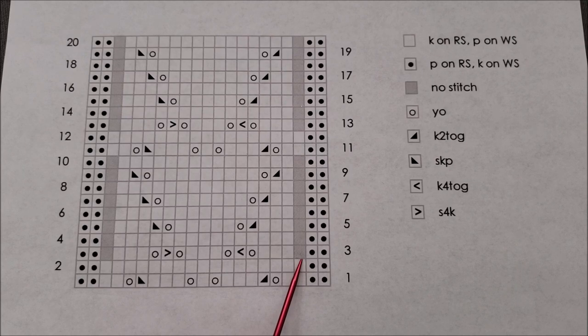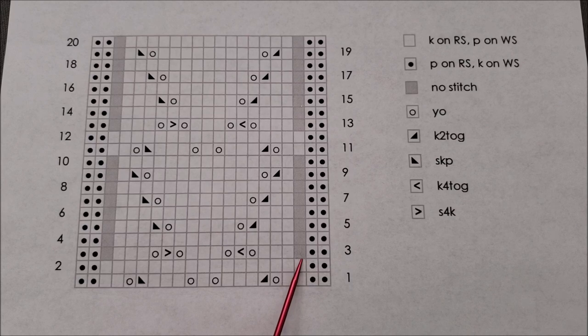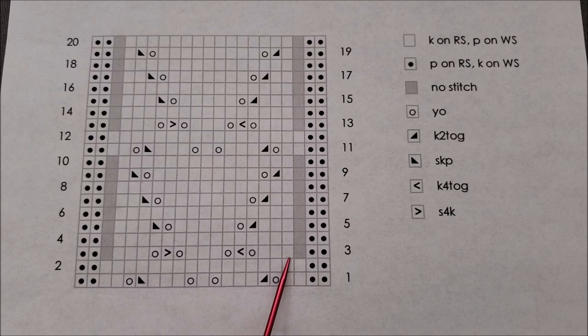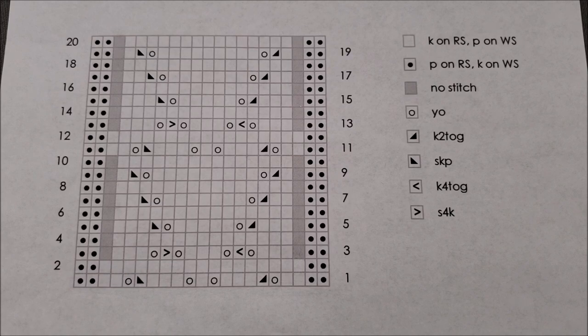Don't overthink this. No stitch simply means that when you get to that space in the chart, you don't work any stitches at all. Simply move on to the next stitch in the charted pattern and continue on. It's just that easy.